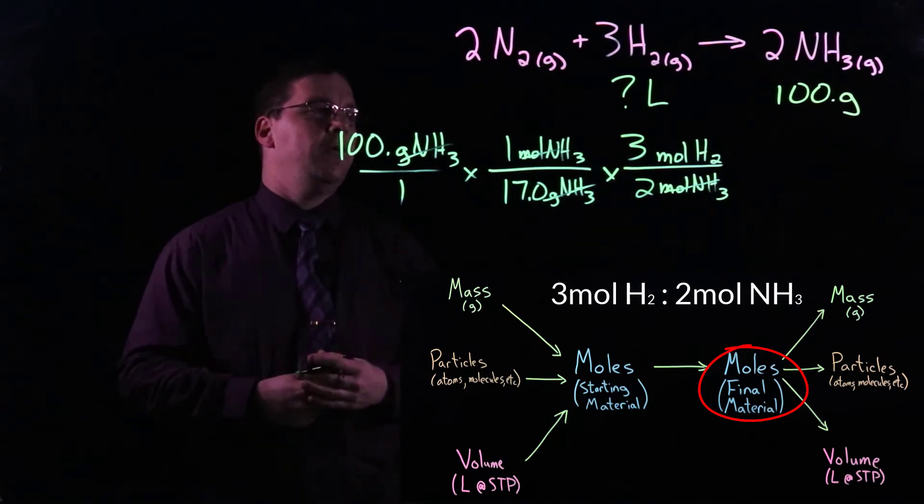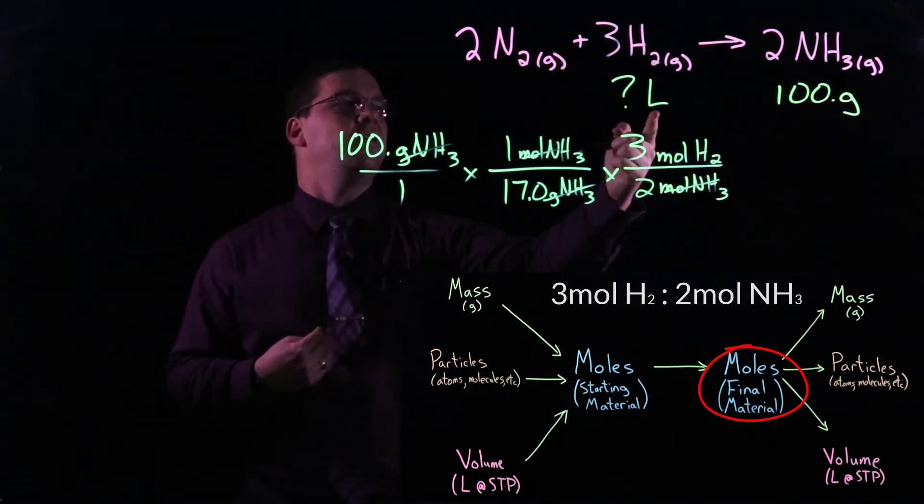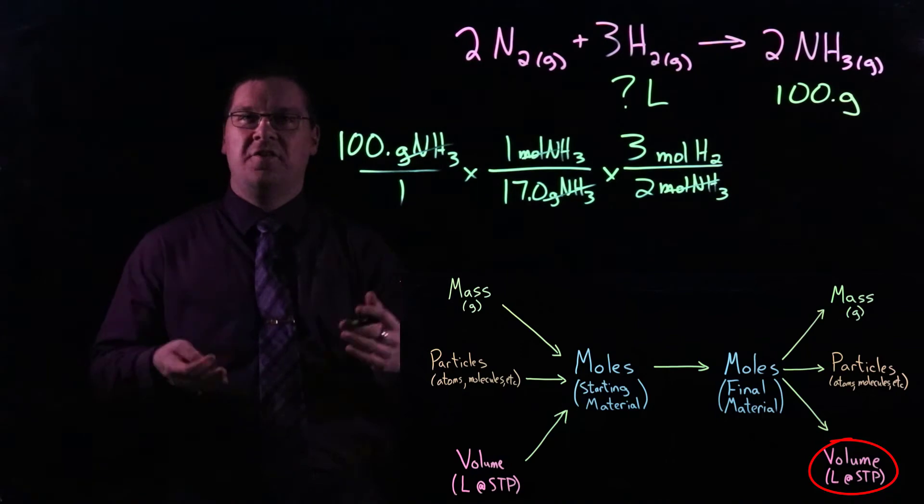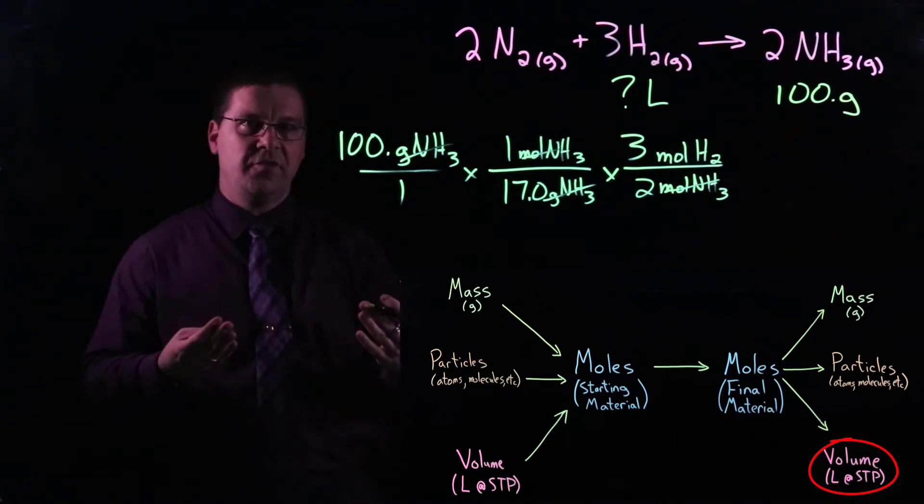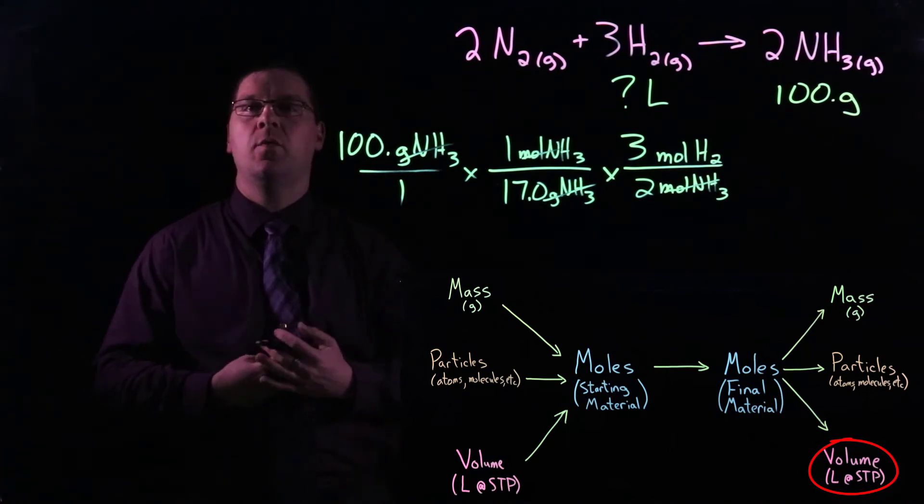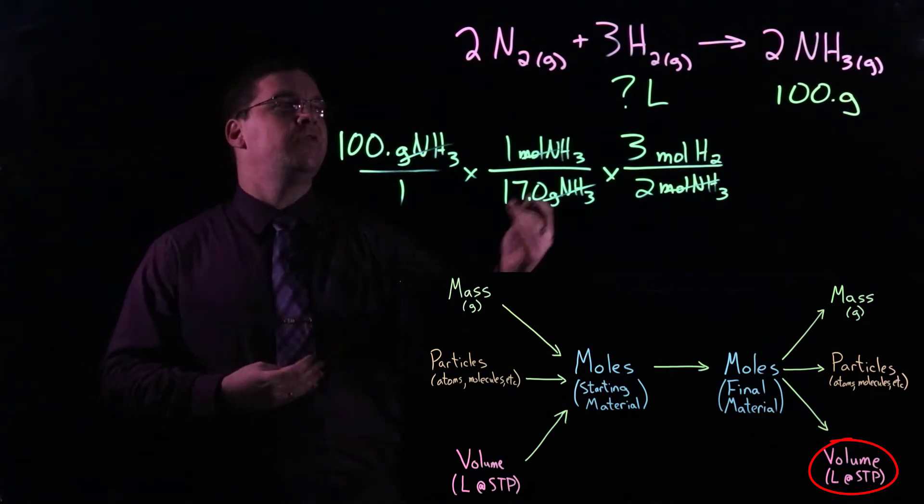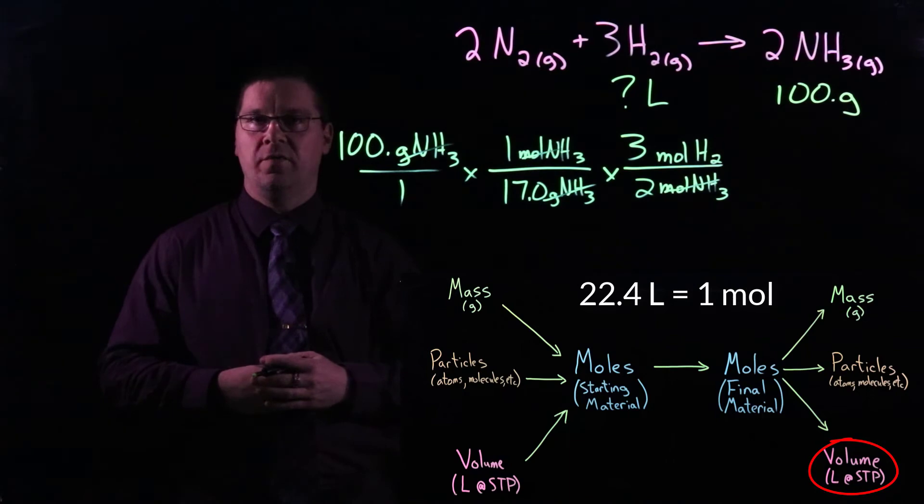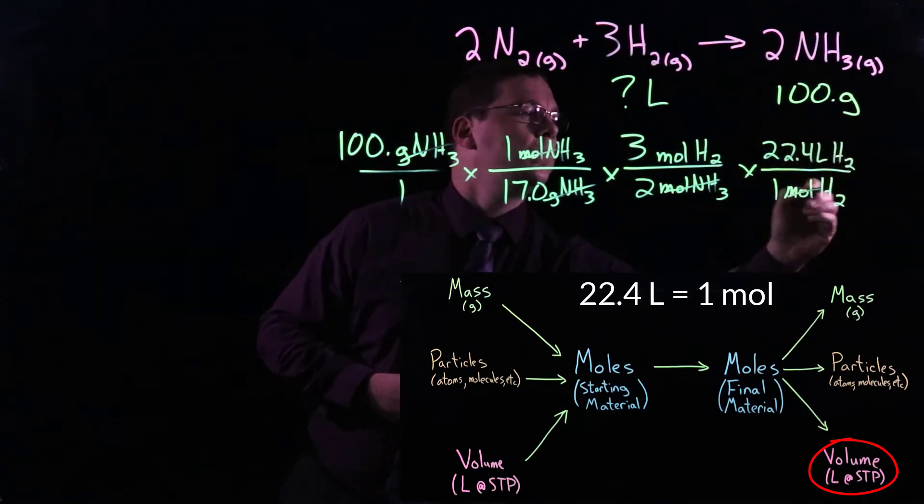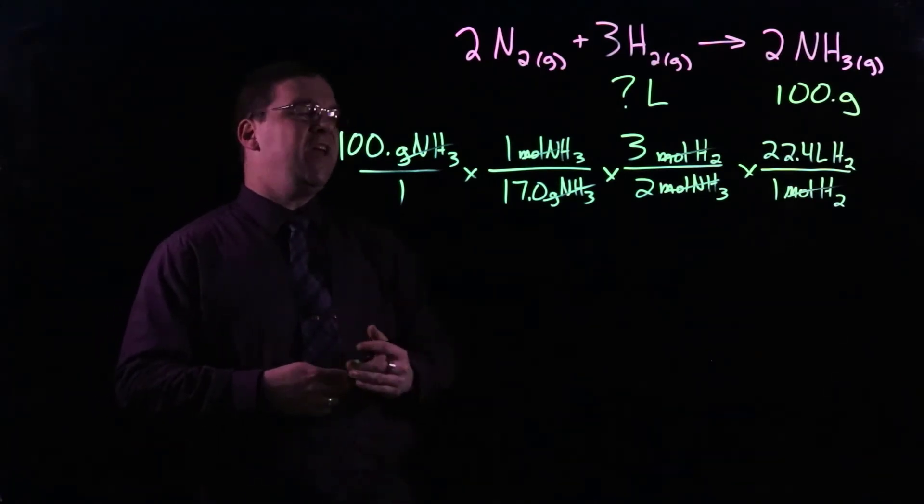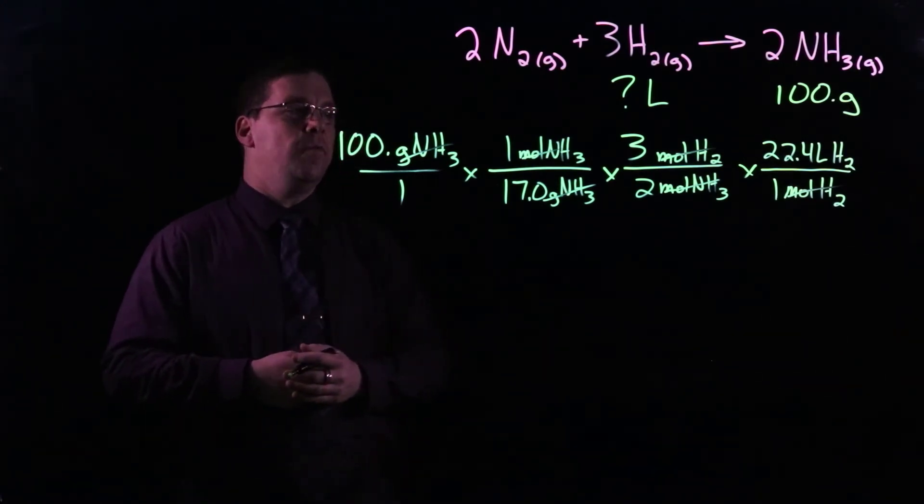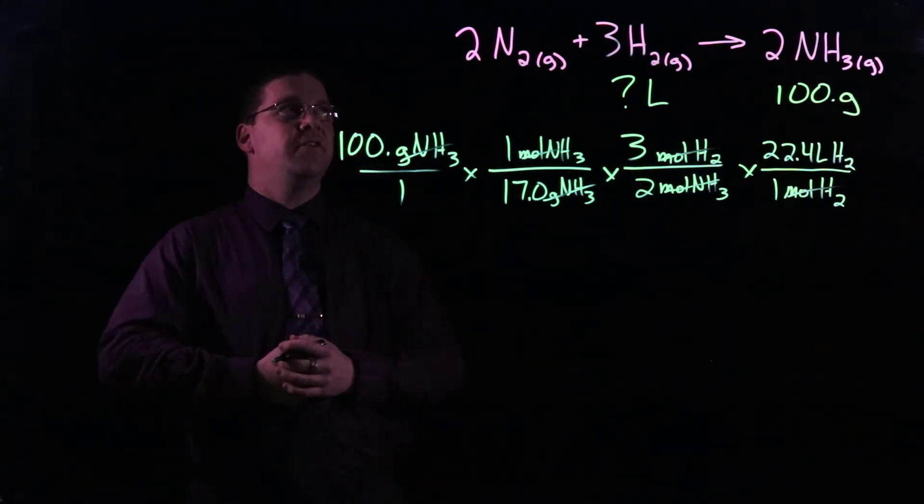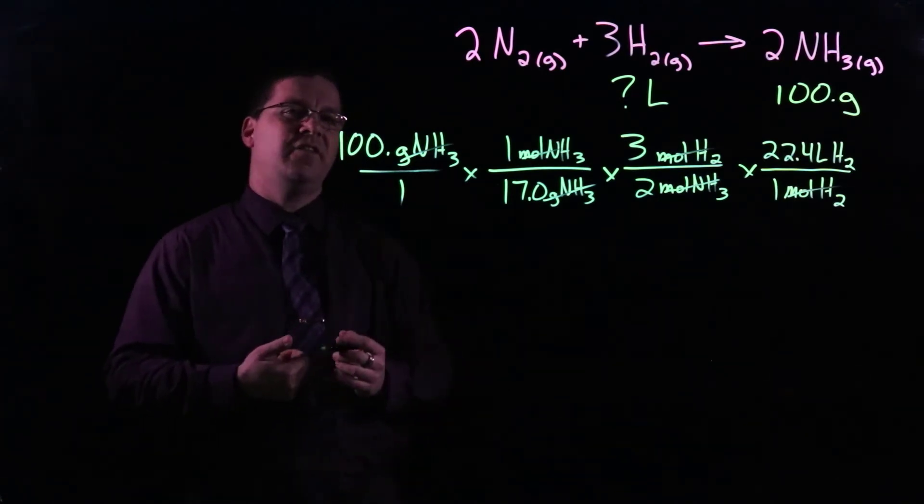Now that we are in moles of the final material, we can go that last step. And in this case, it is to go to liters of hydrogen. And so assuming that we are at standard temperature and pressure conditions, unless you're told specifically otherwise, it's safe to assume that you are at STP when dealing with gases. To go from moles to volume, we use the molar volume for a gas at STP, which is 22.4 liters for every one mole of gas. Now that we've converted our quantity into units of liters of hydrogen, it's time to do the math. And so we multiply across our numerators, multiply across our denominators, then divide the two. And the answer that we get is 197.6 liters.